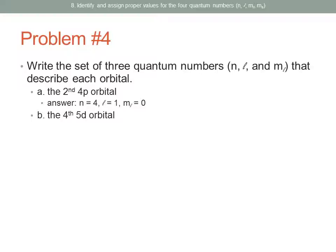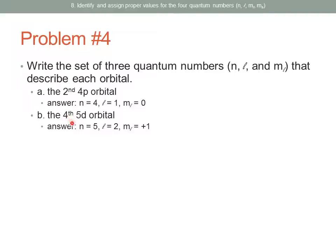For the fourth 5D orbital: N equals 5 because we are in the fifth energy level. L equals 2 because it is a D orbital. The M_sub_L value starts at negative L, so negative 2 is the first orbital, negative 1 is the second, 0 is the third, and positive 1 is the fourth. So M_sub_L equals positive 1. If we were asked for the fifth orbital, it would be positive 2.